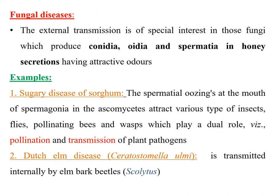For fungal diseases, external transmission is of special interest in fungi which produce conidia, oidia, and spermatia in honey secretions with attractive colors. The smell from these honeydew secretions attracts different insects, which help in dispersal. An example is sugary disease of sorghum caused by Spacelia sorghum.